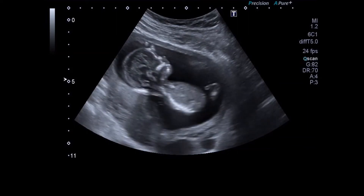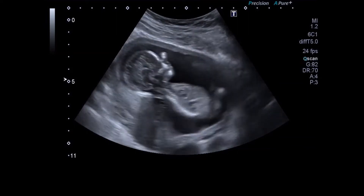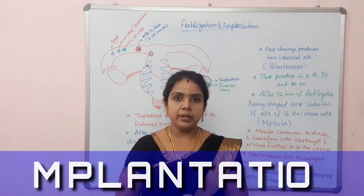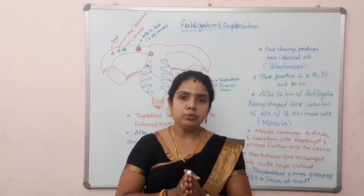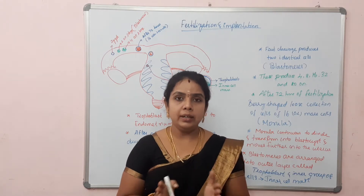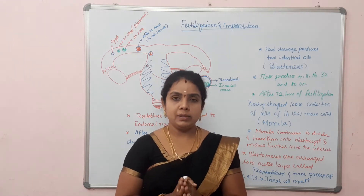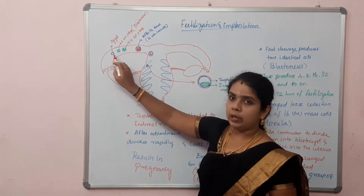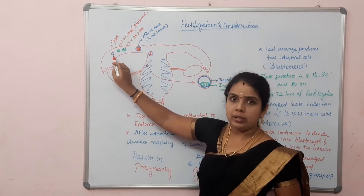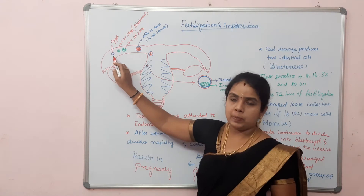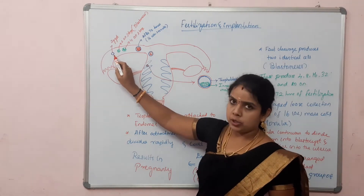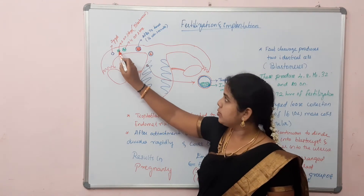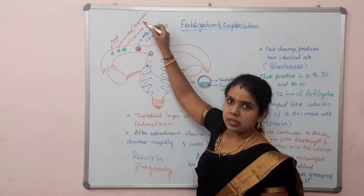Let us discuss about implantation. As soon as the fertilization process is over, the zygote, which is diploid in nature, starts dividing into two cells which are identical to each other. These are called blastomeres. You can see in the diagram — this is the fallopian tube in the ampulla region where the fertilization process takes place. As soon as fertilization is over, it starts dividing into two cells, called blastomeres.